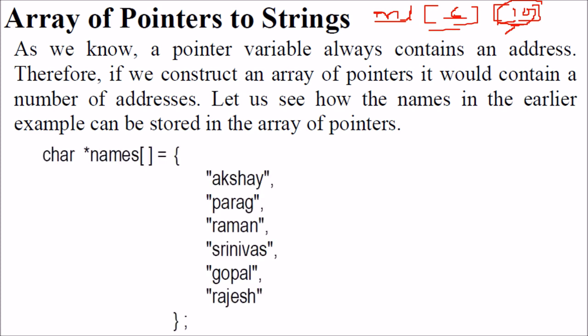So the pointer variable always contains an address, we know that, so if we construct an array of pointers, it would contain number of addresses. Let us see in this way how the names in the example as we just, I just told you can be stored in array of pointers. So these are, if we would have placed it in the way I showed you,